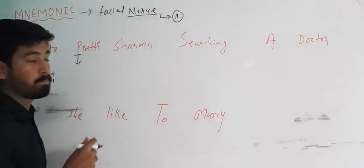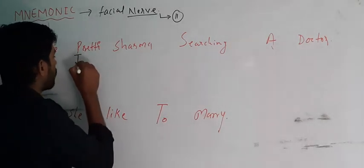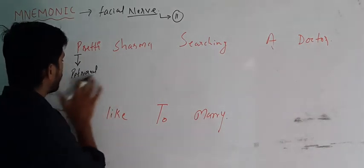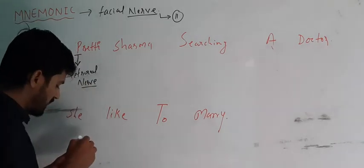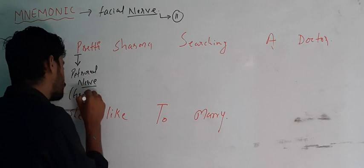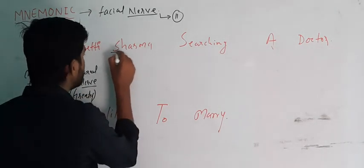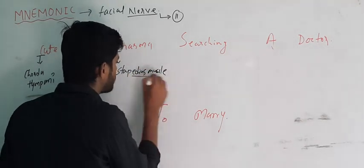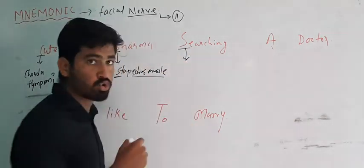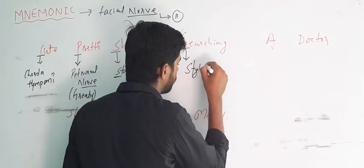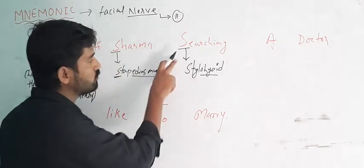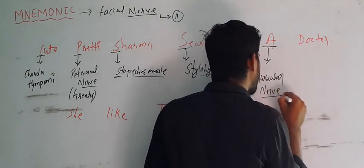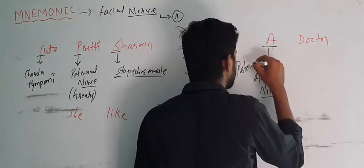P means? P means Petrosal — the Greater Petrosal nerve. And S means? S means — Auricular. Auricular nerve. Which auricular? Posterior auricular. So A means auricular nerve.